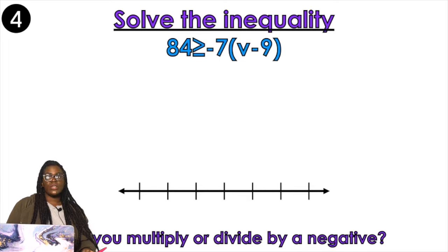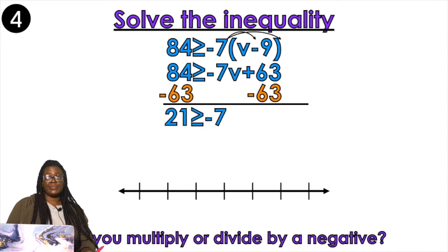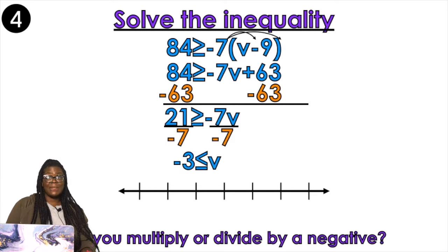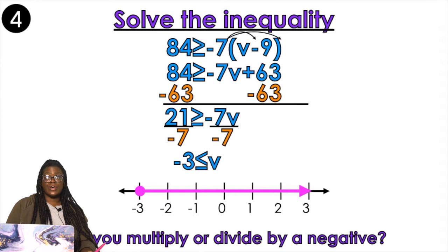Solve the inequality: 84 is greater than or equal to negative 7k minus 9k. Distribute — lots of distributing. Negative 7k plus 63k. 21 is greater than or equal to negative 7k. So we're going to divide by negative 7. Is that a negative on both sides? Yes. So that means I flipped my symbol. Negative 3 is less than v. Remember v is on the other side, so we want to flip it — v is greater than or equal to negative 3, which shows us exactly which direction to shade.